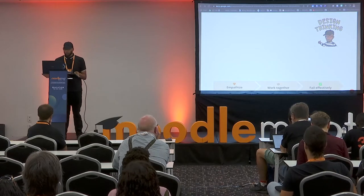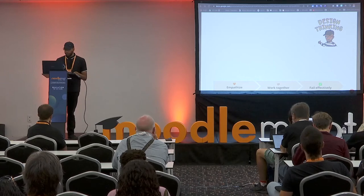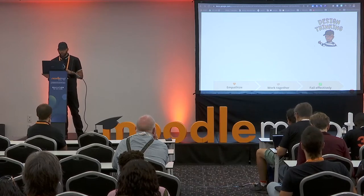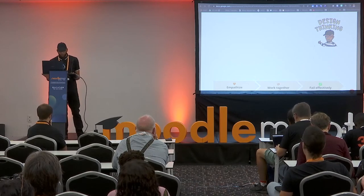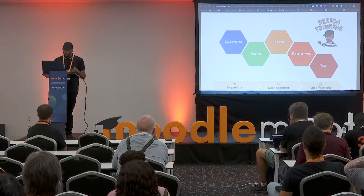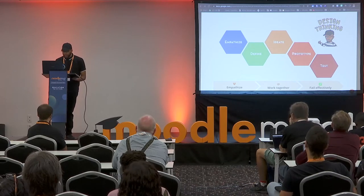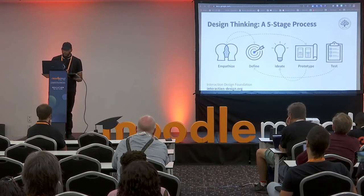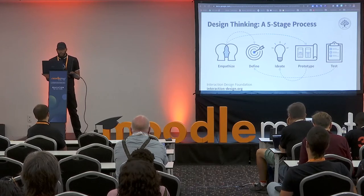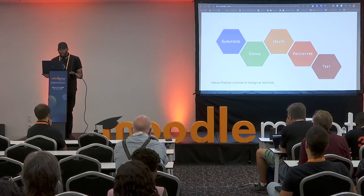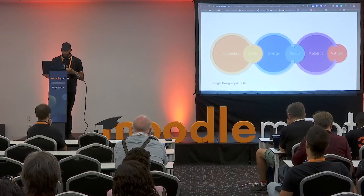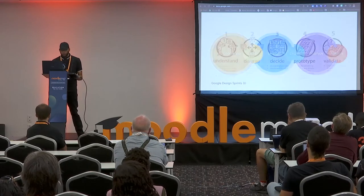The design thinking, or human-centered design process, is a method that encourages people to identify and solve problems by doing three essential tasks: empathize, work together, and fail effectively. Within these three tasks there are five phases: empathize, define, ideate, prototype, and test. Design thinking is an iterative and non-linear process — stages are not always sequential. Many companies have adopted and adapted this methodology with different approaches.